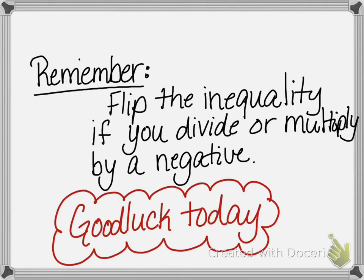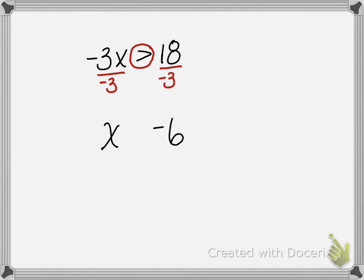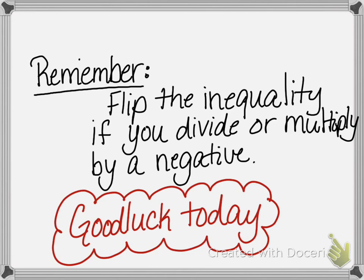Remember: when you do an inequality, if you divide or multiply by a negative, you flip the sign. I'll give you one quick example: if I have negative 3x > 18 and I divide by negative 3, I need to remember to flip that inequality — so x < negative 6. We talked about on the number line how those values swap places when you multiply or divide by a negative — that's why we flip the sign. Good luck on your test, and you guys have a great day, thanks for watching!